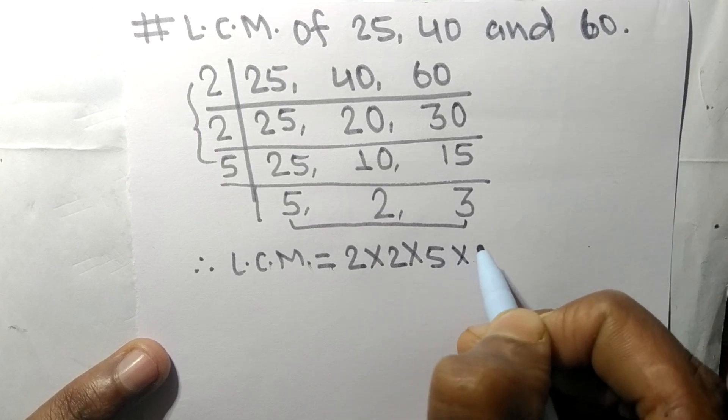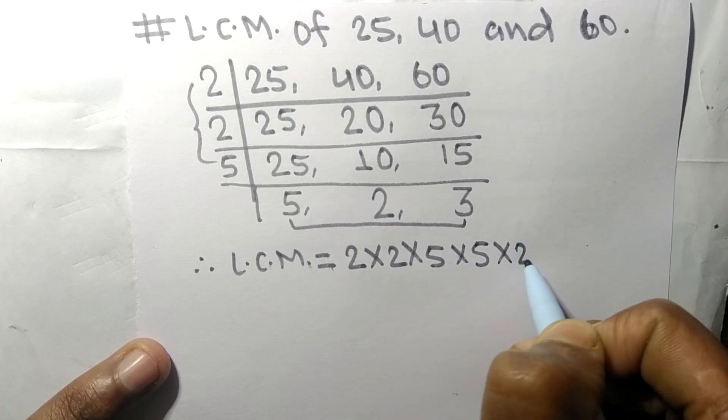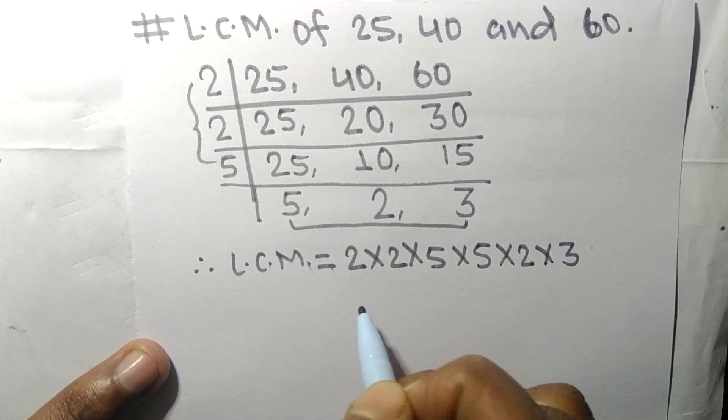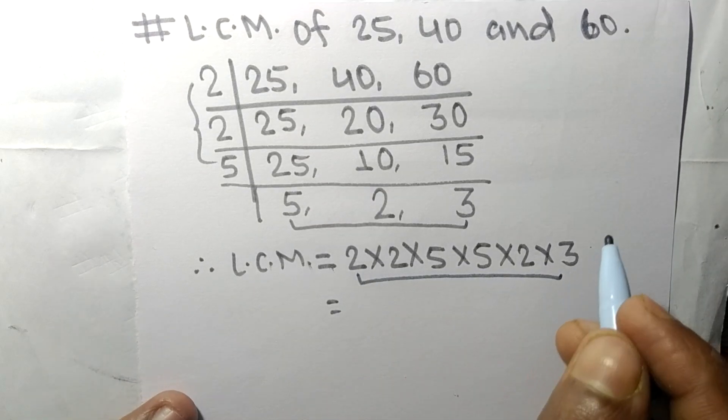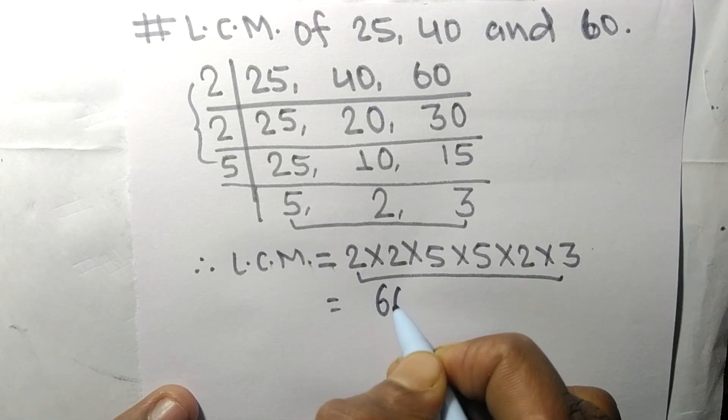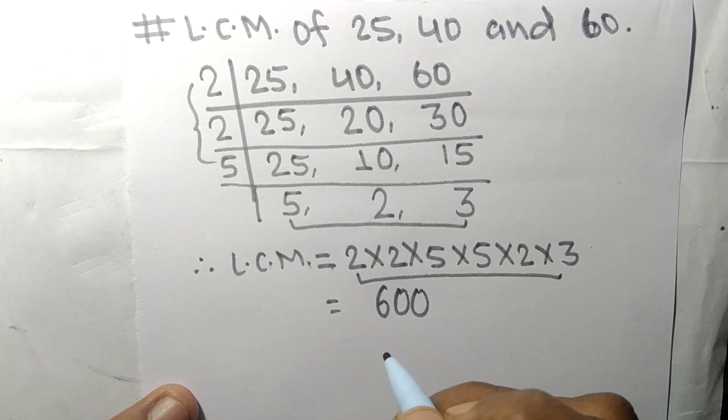And from this side it is 5 times 2 times 3. So by multiplying all these numbers we get 600.